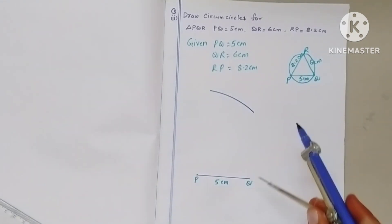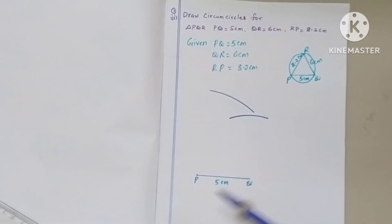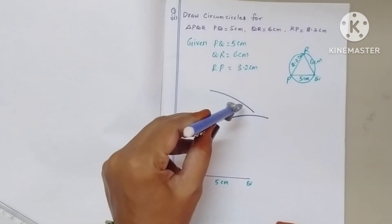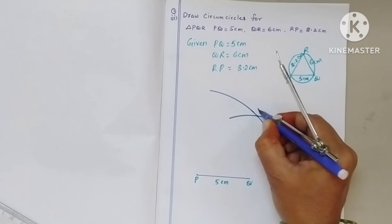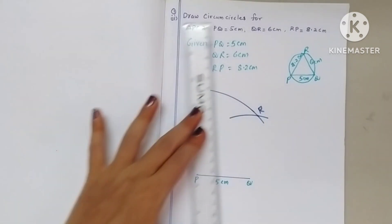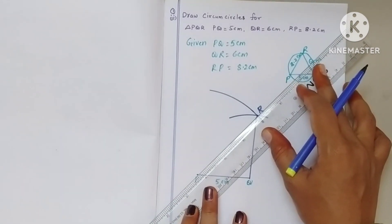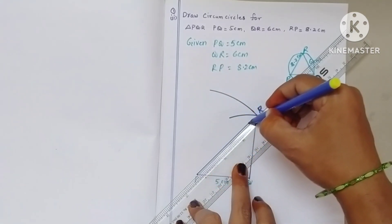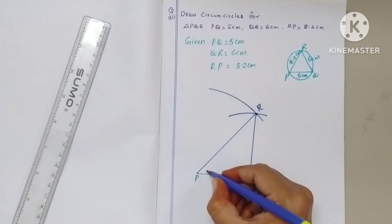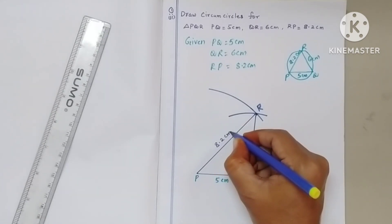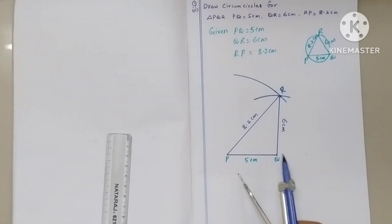With Q as center, draw another arc. If these two arcs are not intersecting, just extend the arc. The intersecting point of these two arcs is R. Join QR and PR. So this is the required triangle, with PR = 8.2 centimeters and QR = 6 centimeters.